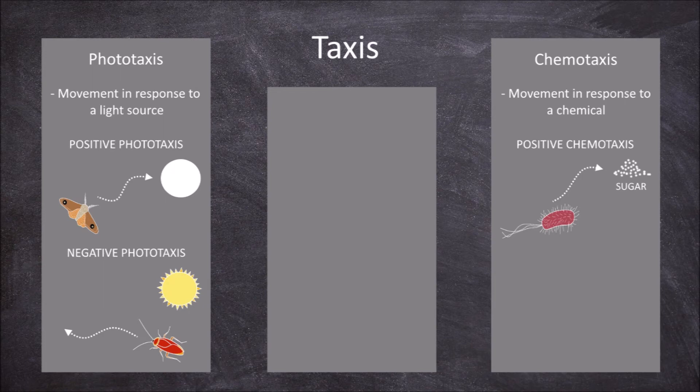E. coli is a mobile bacteria. They have been found to show movement towards the presence of sugar. Negative chemotaxis is the movement away from a chemical stimulus. An example of negative chemotaxis is seen in mosquitoes, when moving away from the source of certain repellents.